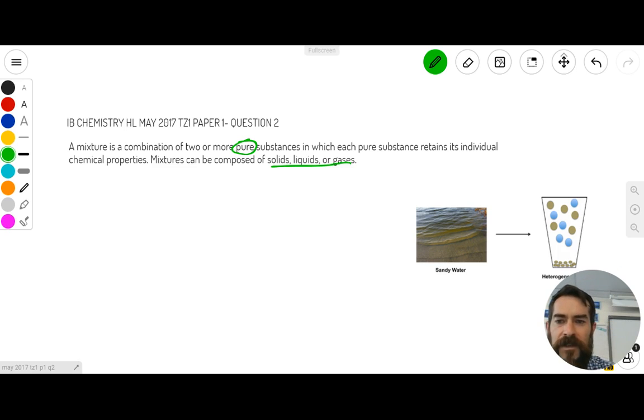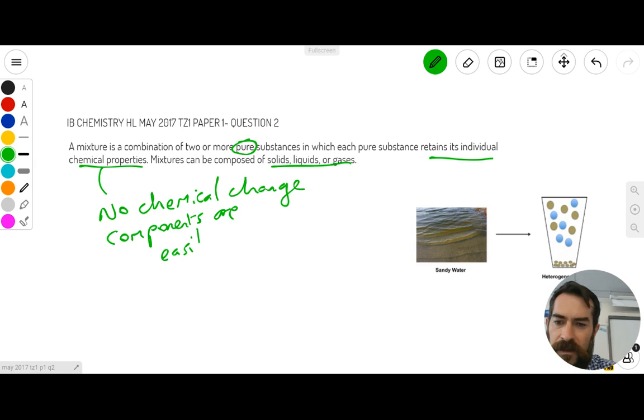And the part of the definition here where it says that it retains its individual chemical properties, what they mean here is that there has been no chemical change. So when you make a mixture in chemistry, there is no chemical change to any of the elements, and what that means is that the components or the parts of a mixture are easily separated.